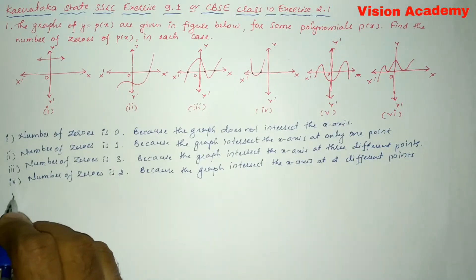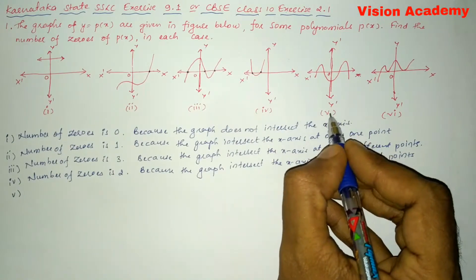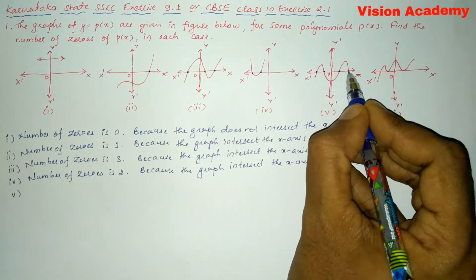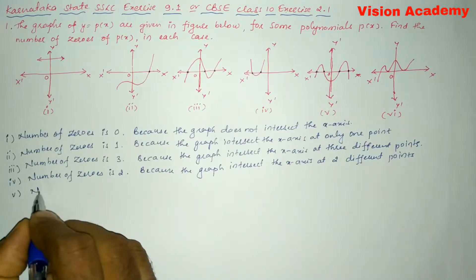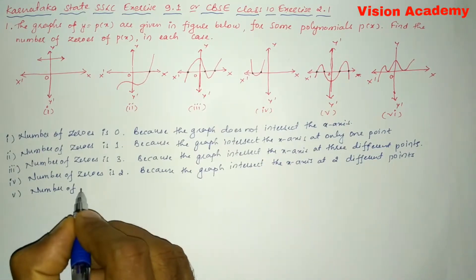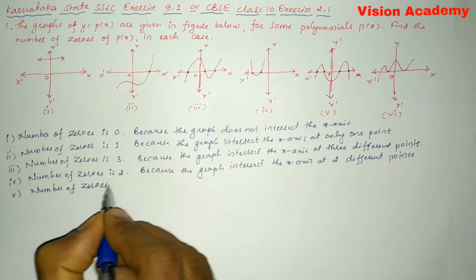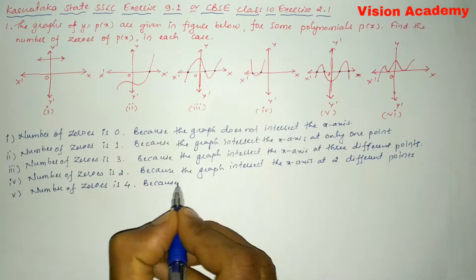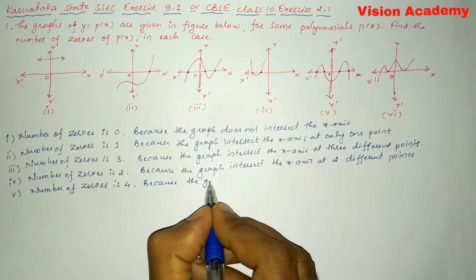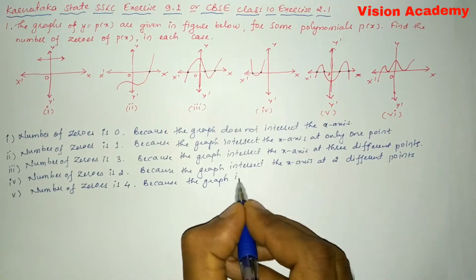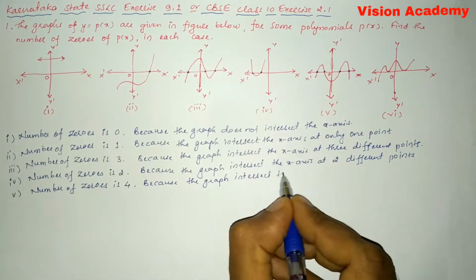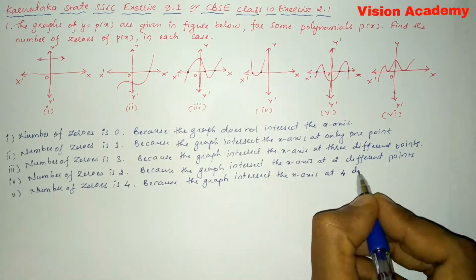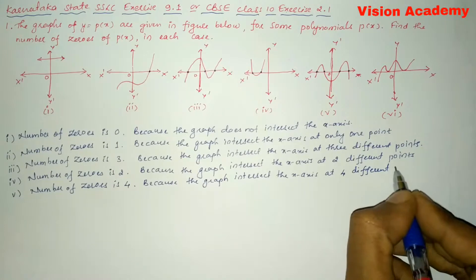Now let us move on to Roman number 5. In Roman number 5 you can see it is intersecting at points 1, 2, 3, and 4. So we can write the number of zeros is 4, because the graph intersects the x-axis at four different points.